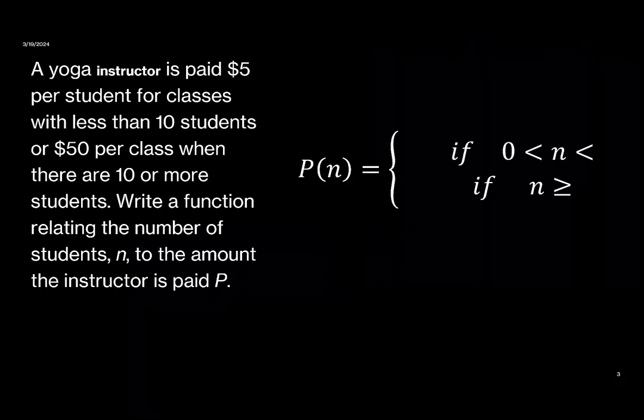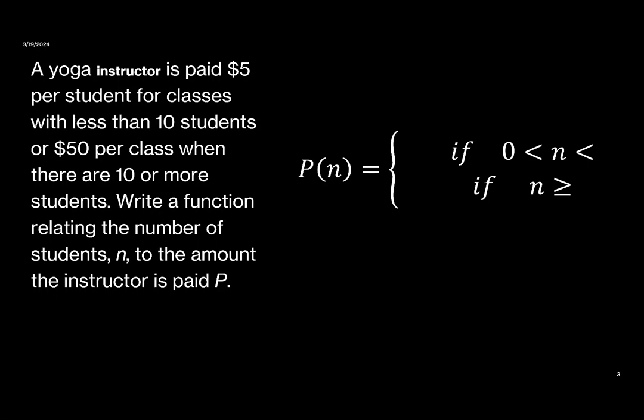Our function looks like P(n) equals, and there's two parts. There's one part when we have less than 10 students, and then we have another piece when we have more than 10 students.